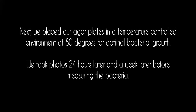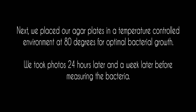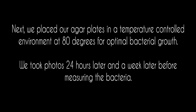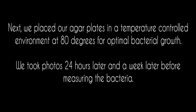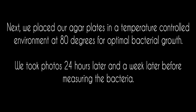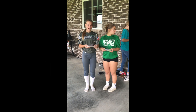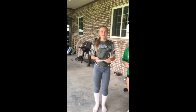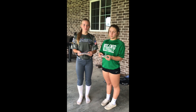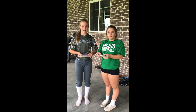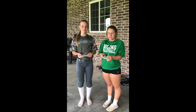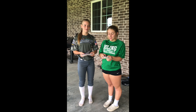Next, we placed our agar plates in a temperature-controlled environment at 80 degrees for optimal bacterial growth. We took photos 24 hours later and a week later before measuring the bacteria. We're going to keep the petri dishes in a controlled temperature area for the next couple of weeks to try to grow the bacteria. Between 70 and 100 degrees is the temperature at which the bacteria will grow best.